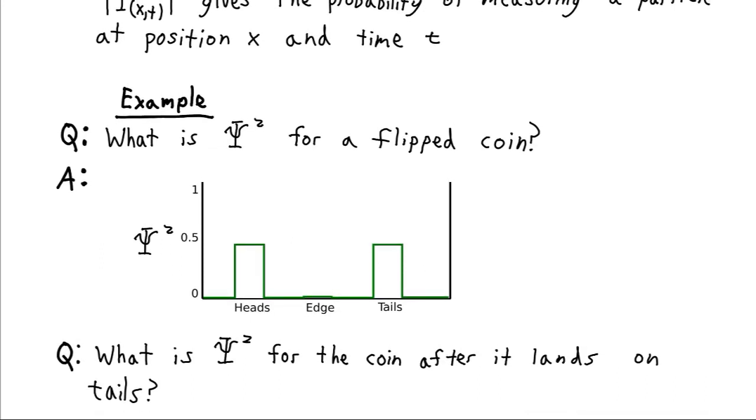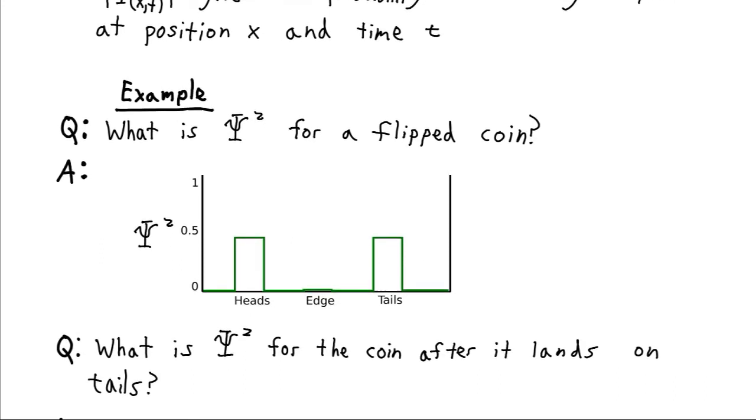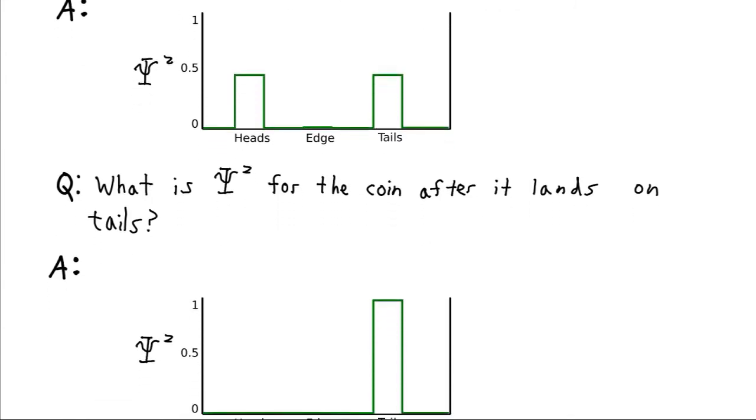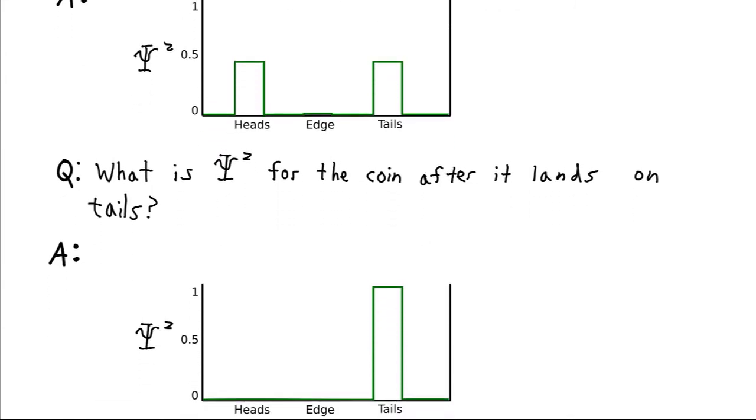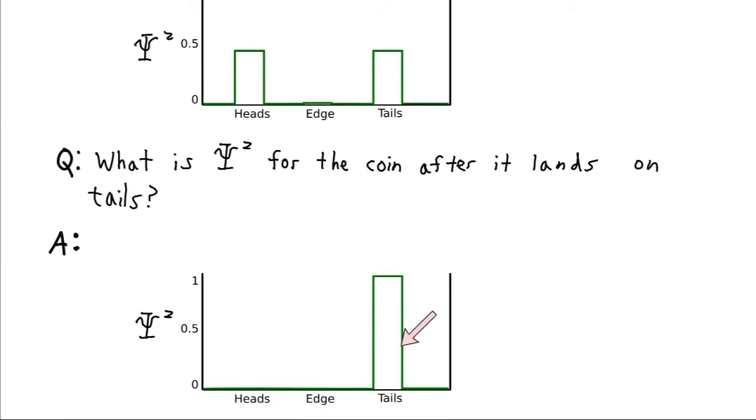Well, what about after it lands? Let's say that it lands on tails. Well at that point, obviously there's no probability of it landing on heads and there's no probability of it landing on the edge. It's just 100% probable that it lands on tails. This is called collapsing the wave function, giving it a definite value.